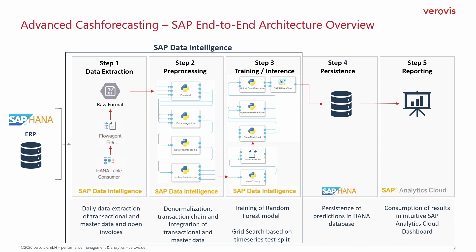Talking about the features of our cash forecasting solution, I will now shed some light on the architecture of the SAP end-to-end process. As with all machine learning approaches, everything starts with data. We extract all relevant tables directly from an SAP ERP ECC system using a daily routine to get all past and open invoices. In the preprocessing step, we denormalize and build a transaction chain from invoice to payment in order to get one consistent data frame to train on.